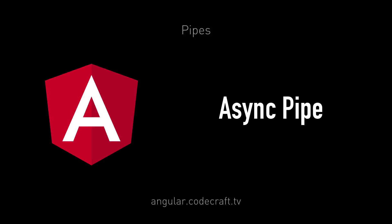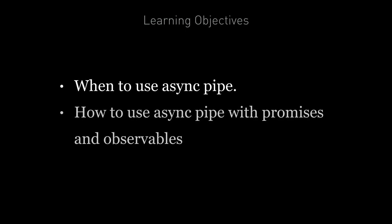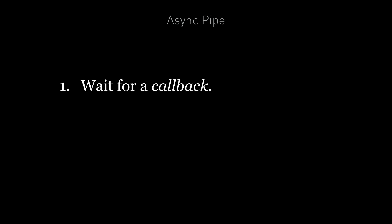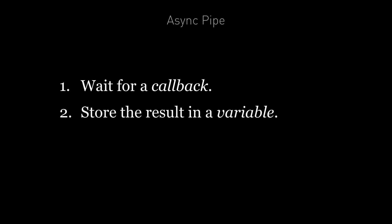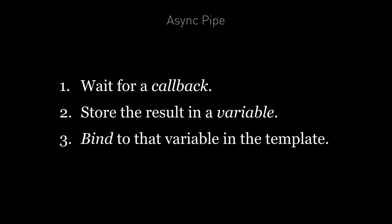In this lecture we're going to cover the topic of async pipe. By the end of this lecture you're going to know when to use the async pipe and how to use async pipe with promises and also observables. Normally to render the result of a promise or an observable we have to wait for a callback, store the result as a variable and then bind to that variable in a template. But with async pipe we can use promises and observables directly in our template without having to store the result on an intermediate property or variable.